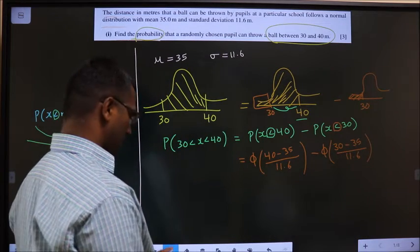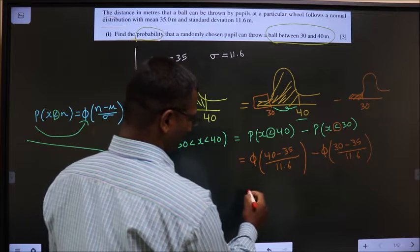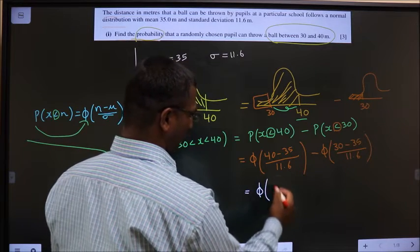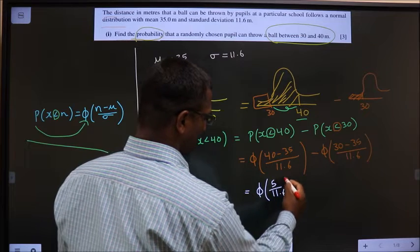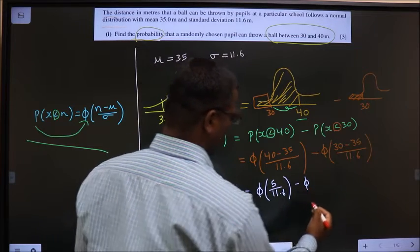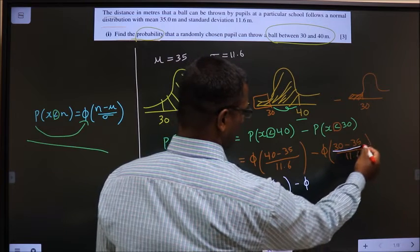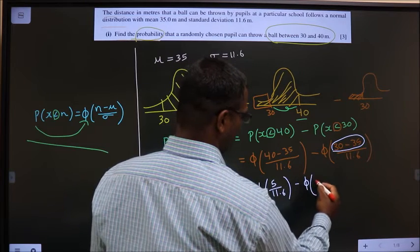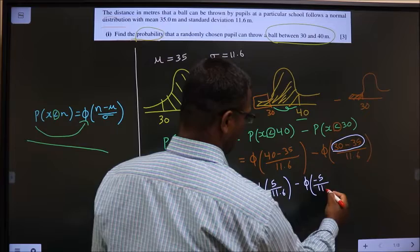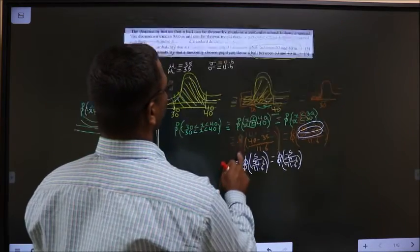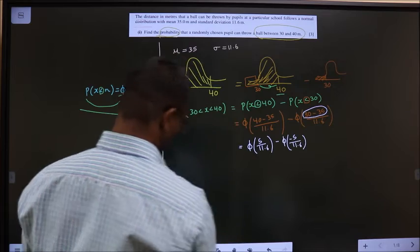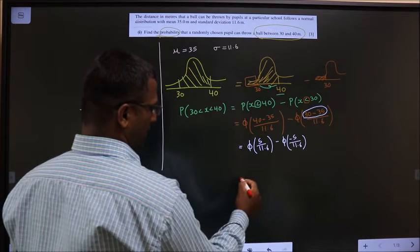Okay. Now, phi of 40 minus 35 is 5 by 11.6. Minus phi of 30 minus 35 is minus 5 by 11.6. Okay. Now, see man.